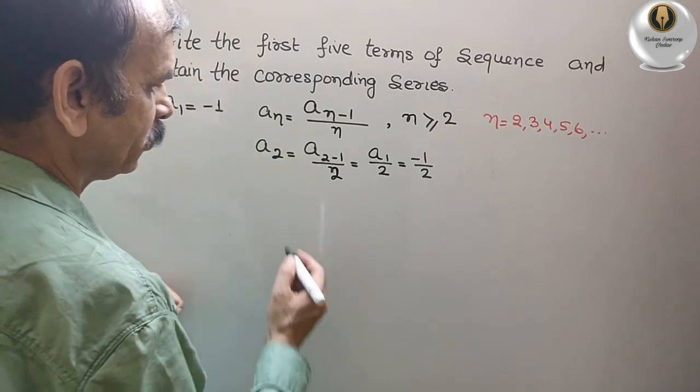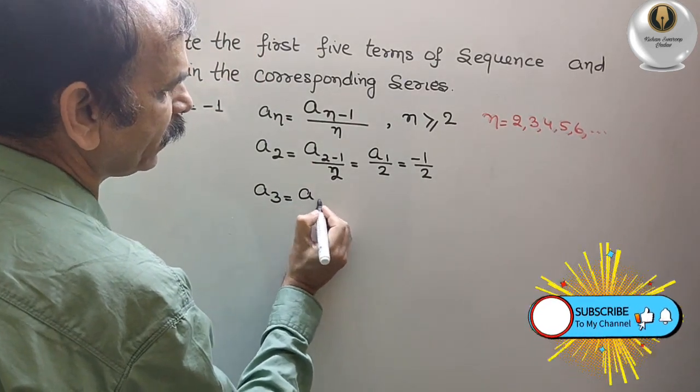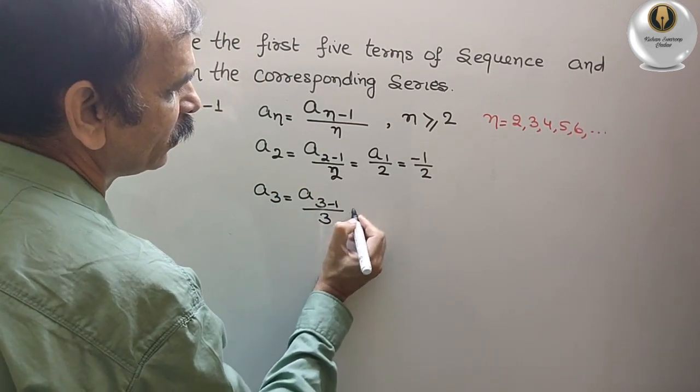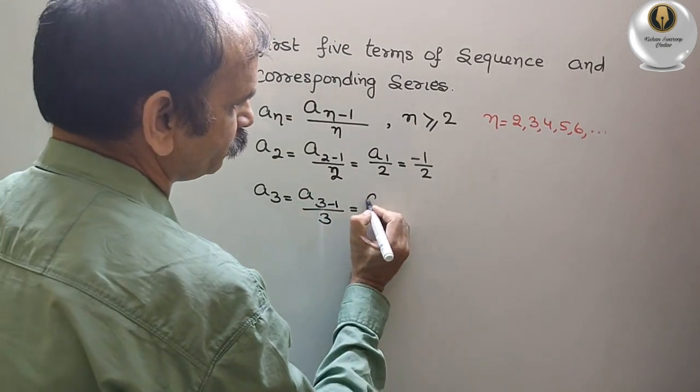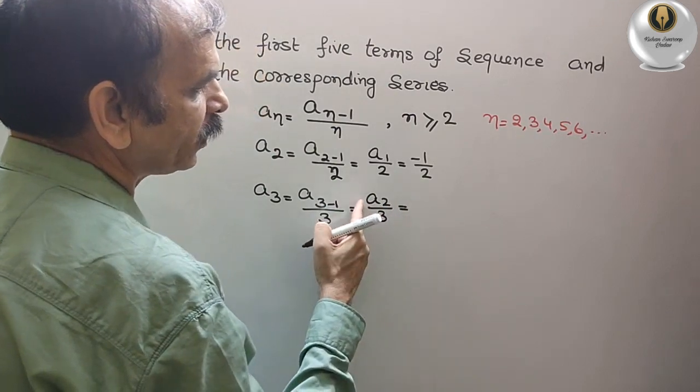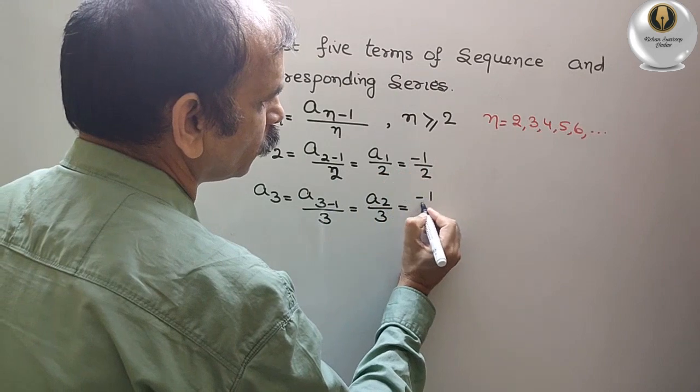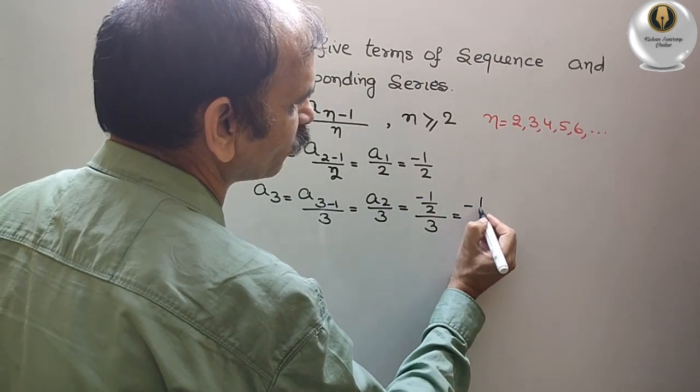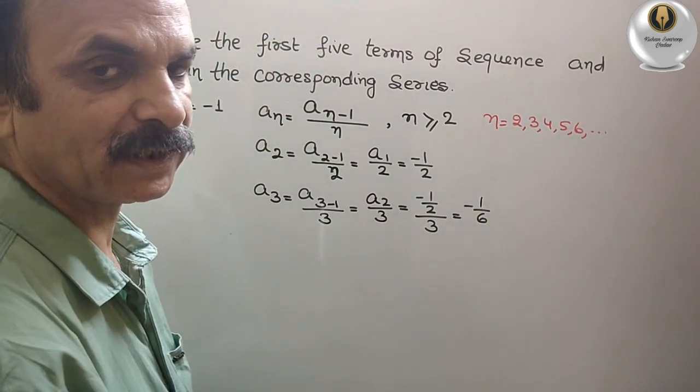Next comes your a3. a3 is equal to a3 minus 1 by 3. That is equal to a2 by 3. a2 is minus 1 by 2, by 3. So we can say it is minus 1 by 6.